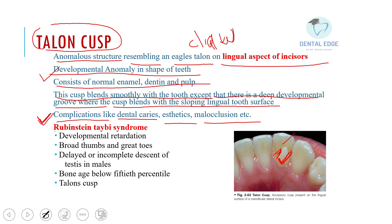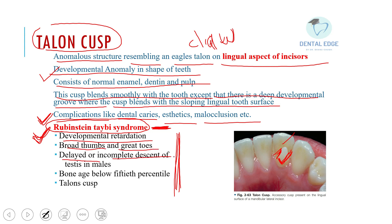One thing frequently asked in exams is which syndrome is associated with talon's cusp. Remember: it is Rubinstein-Taybi syndrome. Talon's cusp is not very common but is usually seen in this syndrome. A syndrome refers to many features occurring together. In Rubinstein-Taybi syndrome, features include developmental retardation, broad thumbs and great toes, delayed or incomplete descent of testes in males, and bone age below the 50th percentile. As a dental student, the key point is that talon's cusp is seen in Rubinstein-Taybi syndrome.